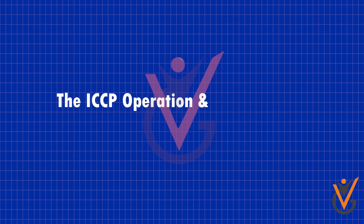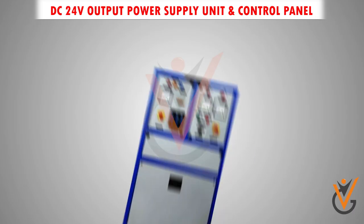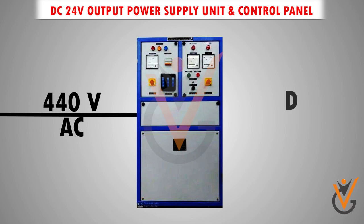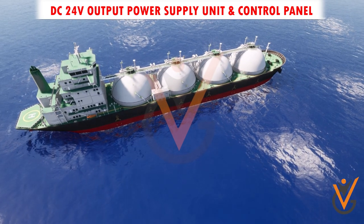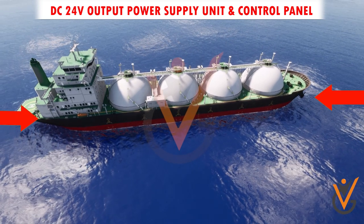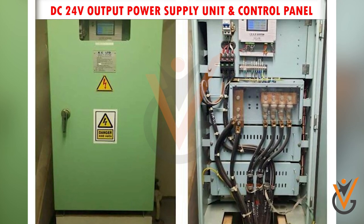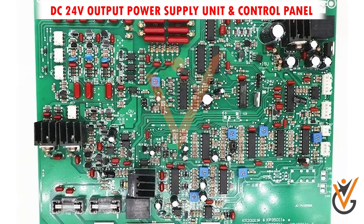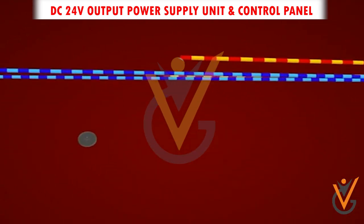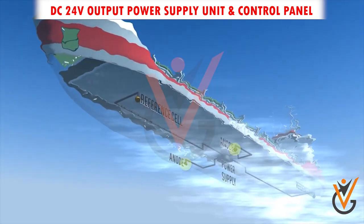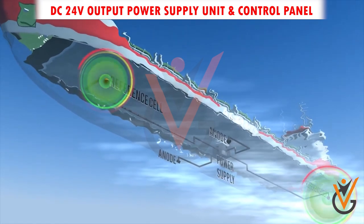The ICCP operation and its components. The DC 24-volt output power supply unit and control panel — the DC power supply may include a rectifier unit converting 440 volts AC supply to DC current. Larger ships usually have two power supply units, each in the forward and the aft. The power supply unit is also known as the quantum ICCP panel, and it contains a network of thyristors and PCBs, which monitor voltage and current parameters from the reference cells and accordingly send signals to the impressed current anodes. These power supply units have a master-slave configuration between forward and aft units, and performance can be monitored from the ECR monitor panel.